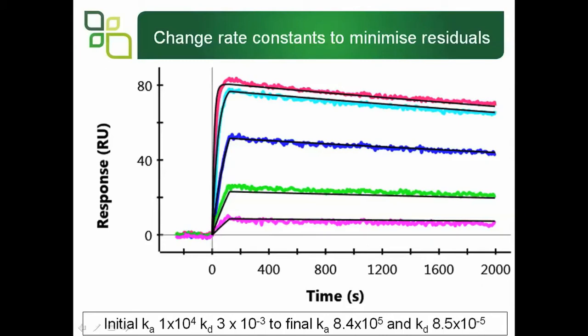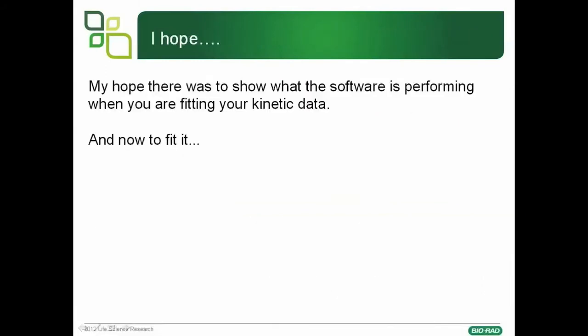Initially we went from 10⁴ to 10⁻³. We end up with 8×10⁵ and 8.5×10⁻⁵ for Kd. The software goes through many iterations to find the rate constants that most closely match the experimental data. Hopefully this has shown you what the software is performing when it is doing its fitting. Now to go through a fitting exercise.